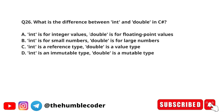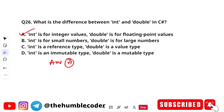What is the difference between int and double in C sharp? The options are: A) int is for integer values, double is for floating point values; B) int is for smaller values, double is for large numbers; C) int is a reference type, double is a value type; D) int is immutable, double is mutable. The correct answer is option A — int is for integer values, whereas double is for floating point values.